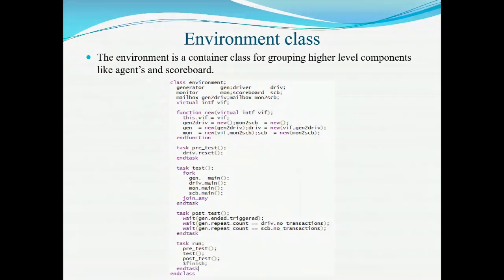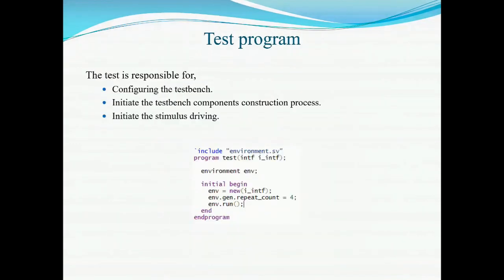Next we move on to the test code. The test code is written within a program block. The testbench is responsible for creating the environment, configuring the testbench, and initiating the stimulus driver. Here we first declare and create the environment, then assign the number of transactions to the repeat count variable of the generator class, and then initiate the stimulus driver by calling the environment run method.